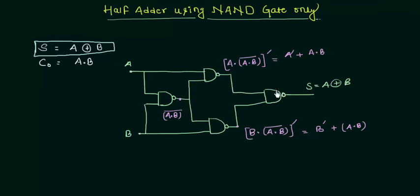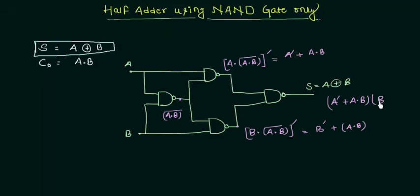Now let's move to our last step, in which we combine these two expressions and take their complement. So we have: A complement OR A AND B, then we AND it with B complement OR A AND B, and then we take the complement of the whole thing.